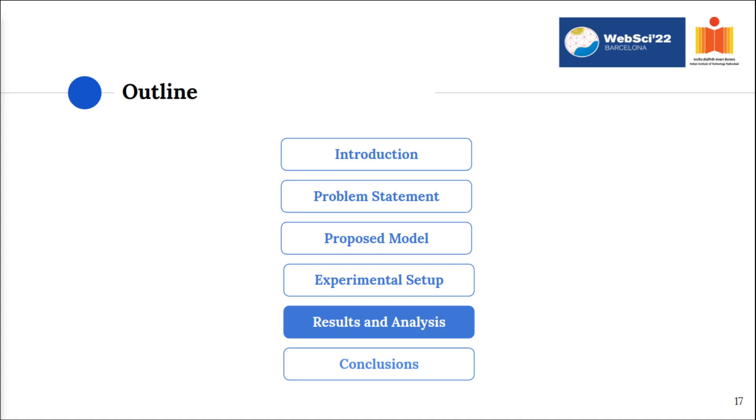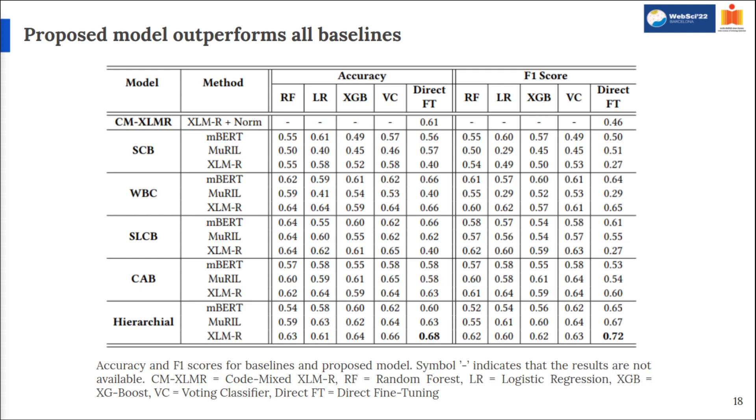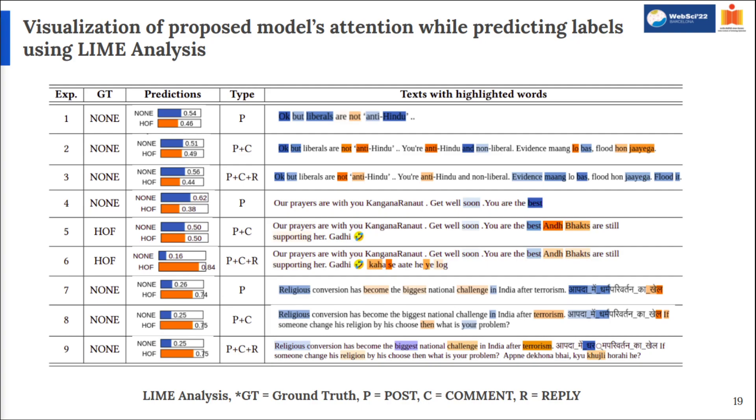With the experimental setup completed, we train and test the hierarchical model to obtain the results. These results are analyzed in this section. We performed various experiments under different settings, comparing our baselines with proposed models. Method indicates the pre-trained model used to obtain representations. We did direct fine-tuning and used different machine learning models like random forest, logistic regression, XGBoost, voting classifier for classification. The table clearly shows that proposed model performed better than baselines in terms of accuracy and F1 score.